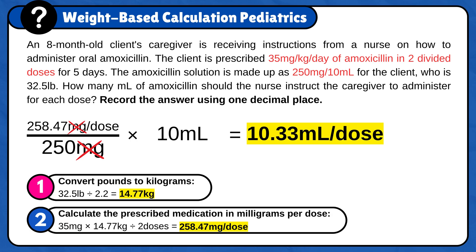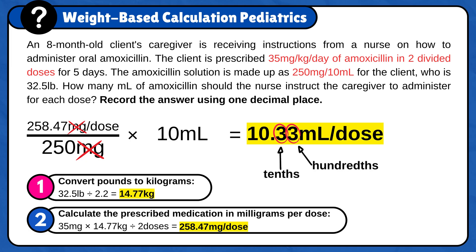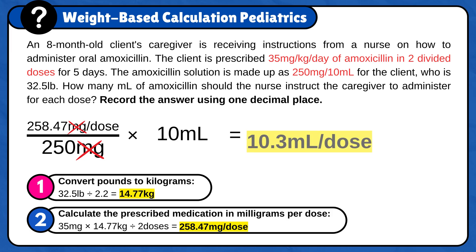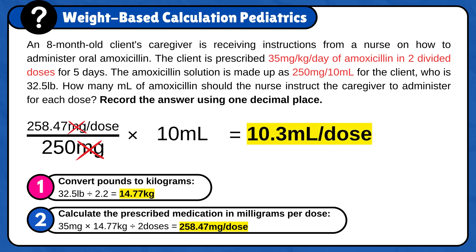Now, round to one decimal place. Since the hundredth digit is between 0 and 4, you would round down by keeping the tenth place the same. The final answer is 10.3 milliliters per dose.